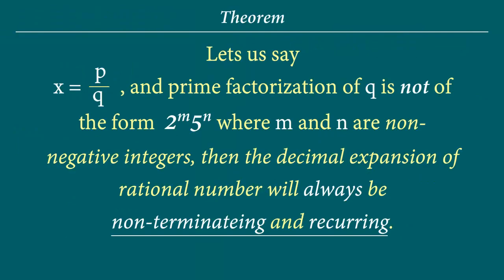So the theorem goes like this. If we have a rational number which is of the form p by q and the prime factorization of q is not of the form 2 raised to the power m times 5 raised to the power n where m and n are non-negative integers, if we have a situation like that, then the decimal expansion of the rational number will always be non-terminating and recurring.